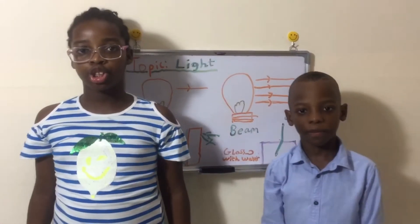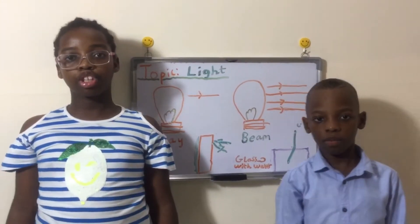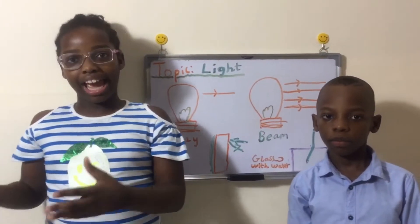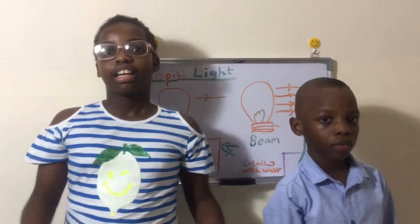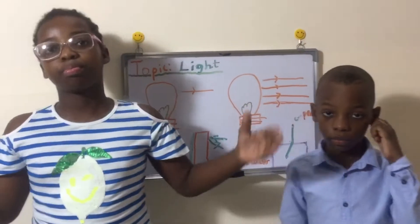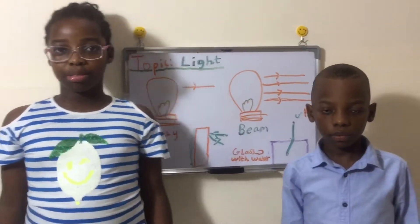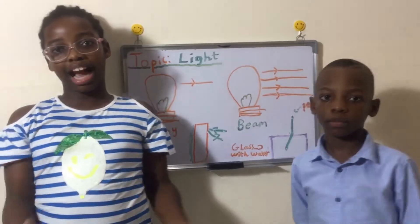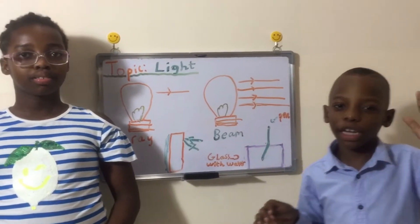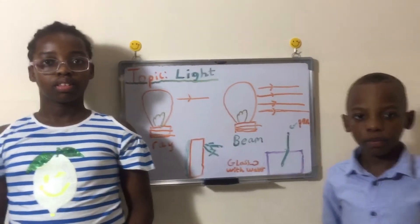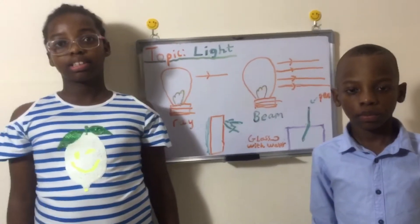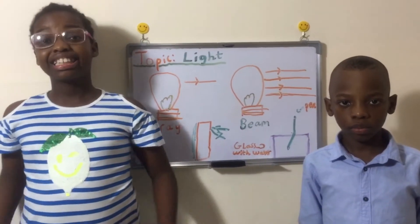So what is the definition of light? The definition of light is the natural agent that stimulates sight and makes things visible. So that just means that without light you can't see. It is impossible to see other things when the light is off.